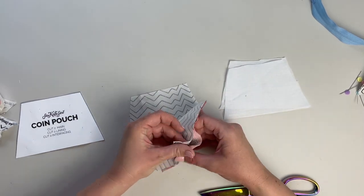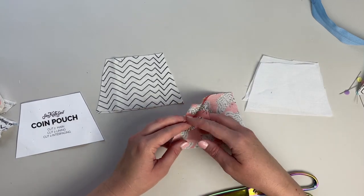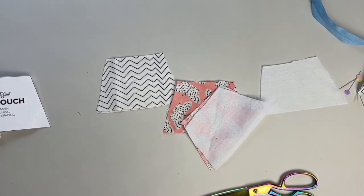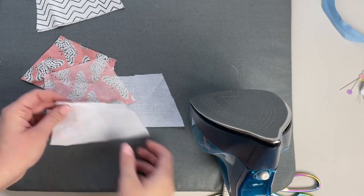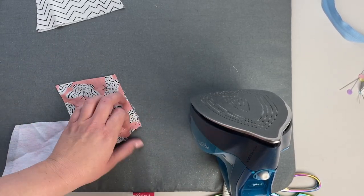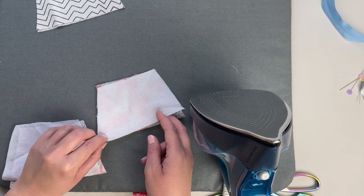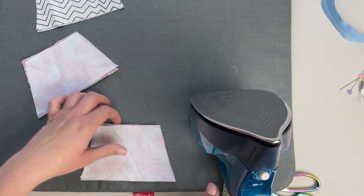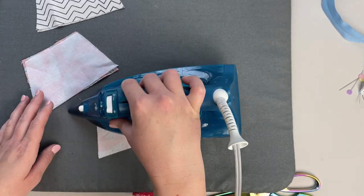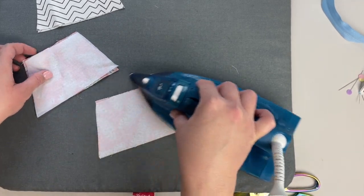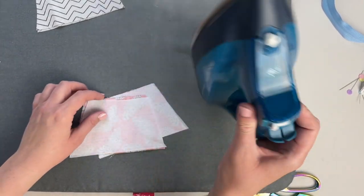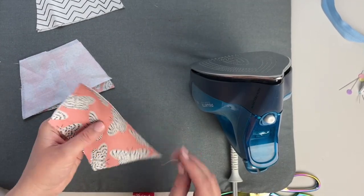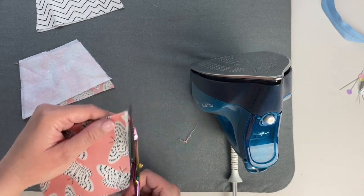So I'm using ShapeFlex interfacing. It's a fusible ShapeFlex. Any kind of interfacing will work for this pouch. We just need a little extra stability. So I'm going to fuse it to the back of my main fabric pieces. Then if you have any extra interfacing you can trim it off just to straighten up your edges.